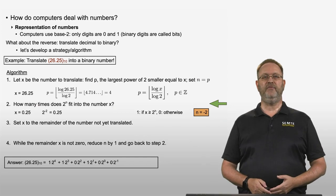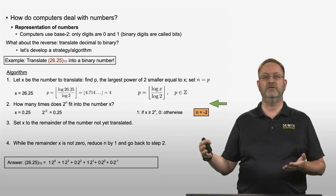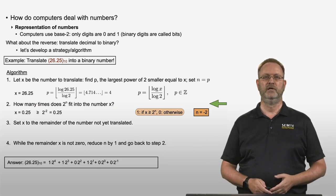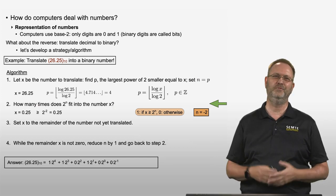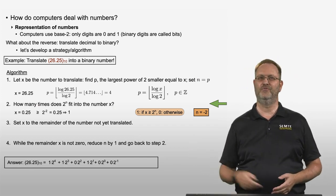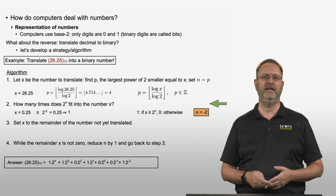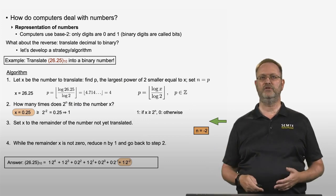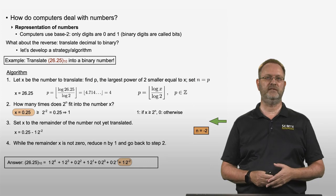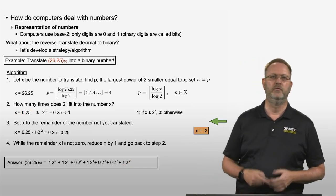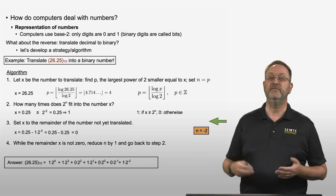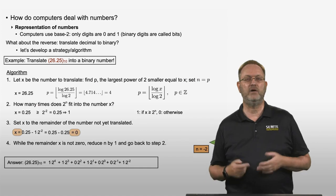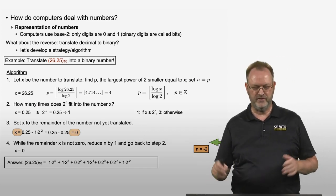Now we compare 0.25 to 2 to the power negative 2, which equals 0.25. Since 0.25 is greater than or equal to 0.25 (they are equal), the digit is 1. We write plus 1 times 2 to the power negative 2. Step 3: we subtract 0.25 from 0.25, giving a remainder of 0. At step 4, the remainder is finally 0, so we stop the algorithm.